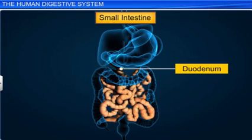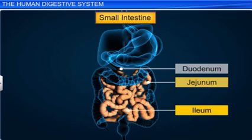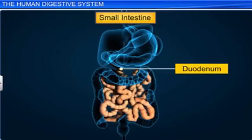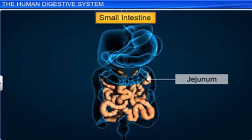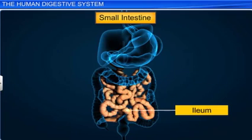The duodenum is followed by the jejunum and ileum, that make up the rest of the small intestine. While the duodenum is the short U-shaped portion, the jejunum is the long coiled portion. The ileum, on the other hand, is a highly coiled region that opens into the large intestine.